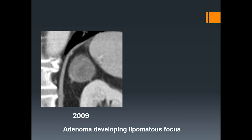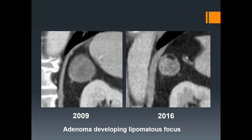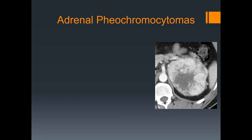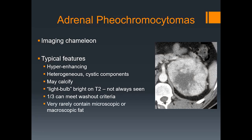This is a case of a proven adrenal adenoma that in 2009 was entirely soft tissue density; however, the patient returned for a CT seven years later and had developed a small focus of macroscopic fat within the tumor. Moving on to adrenal pheochromocytomas — these have been termed the imaging chameleon due to their wide variety of appearance. Typical features include a hyper-enhancing, heterogeneous tumor that may have cystic components. Calcifications are possible, and the classic MRI feature is the lightbulb appearance on T2-weighted imaging, though this is not always seen. About one-third of pheochromocytomas can meet washout criteria, so the specificity of washout is not 100%.